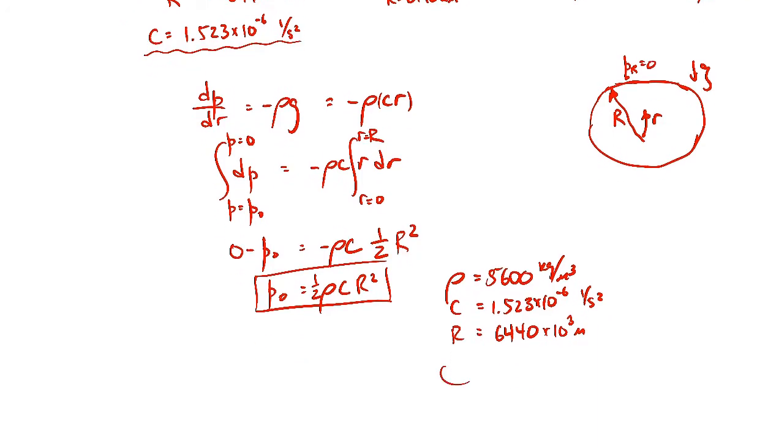And when you plug those numbers in, you get that our gauge pressure at the center of the earth is 1.769 times 10 to the 11th pascals. It's an enormous number.